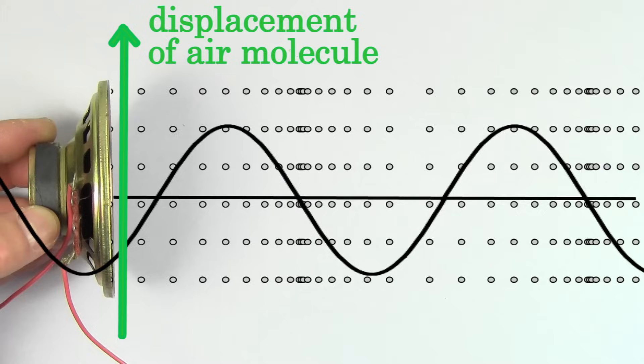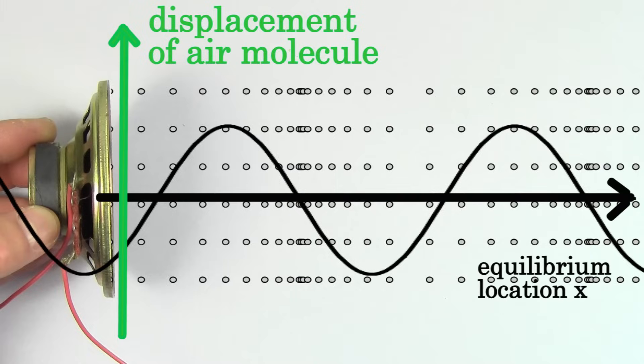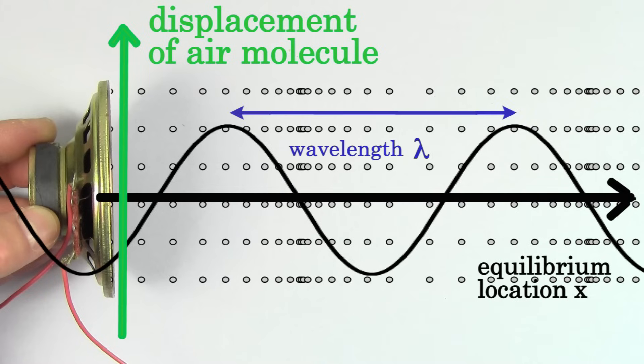But a displacement versus position graph represents a snapshot of the displacement of all the air molecules along that wave at a particular instant of time. And on this type of graph, the interval between peaks represents the wavelength.